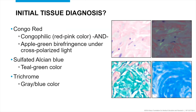For initial tissue diagnosis, the first stain is Congo red. We want to see Congophilia — that pinkish red color. In this case of myocardium, the amyloid is wrapped around myocytes. When we put it under cross-polarized light, we want to see apple green birefringence. It's actually quite beautiful under the microscope, though extremely challenging to photograph. Another stain is sulfated alcian blue, which stains amyloid a nice teal green — almost like that old toothpaste color. Trichrome stains will stain amyloid in a grayish blue color.